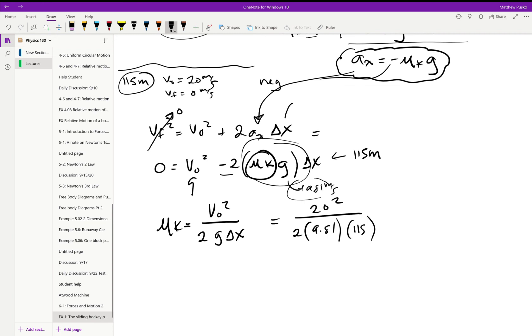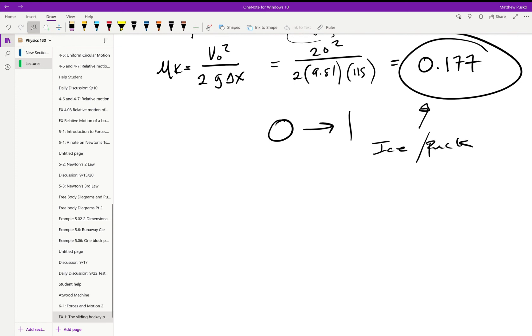I misspoke earlier, sorry. This ends up being a mu equal to 0.177. And remember I told you mu ranges from zero to one typically. That's a pretty low mu, so this is a hockey puck on ice. We can go lower than that. Teflon is pretty dang low. Just some examples real quick.